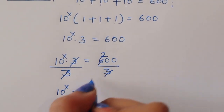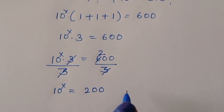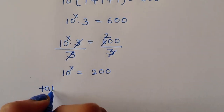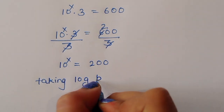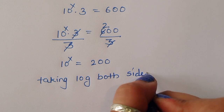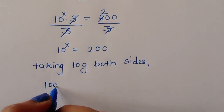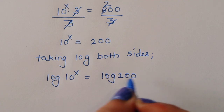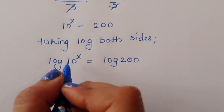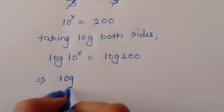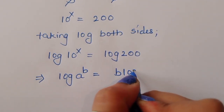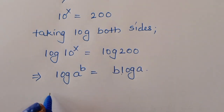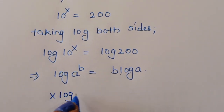Now we take log on both sides. Taking log of both sides, we get log of 10 power x is equal to log of 200. Using the formula log of 10 power x, it becomes x times log 10.